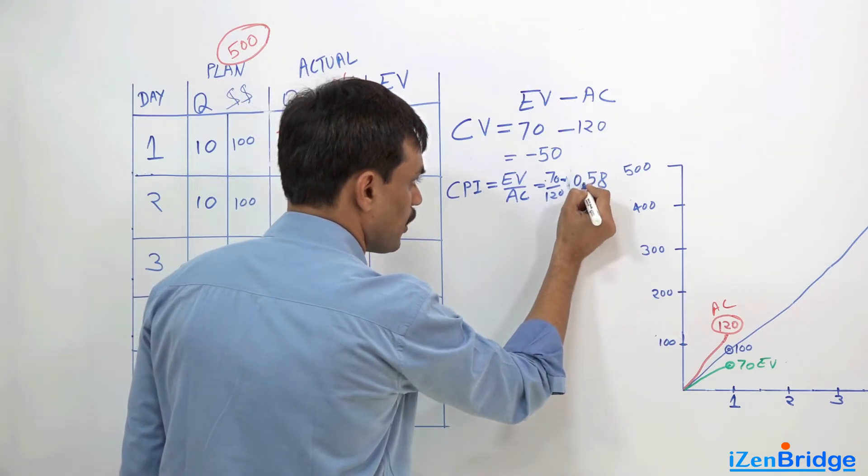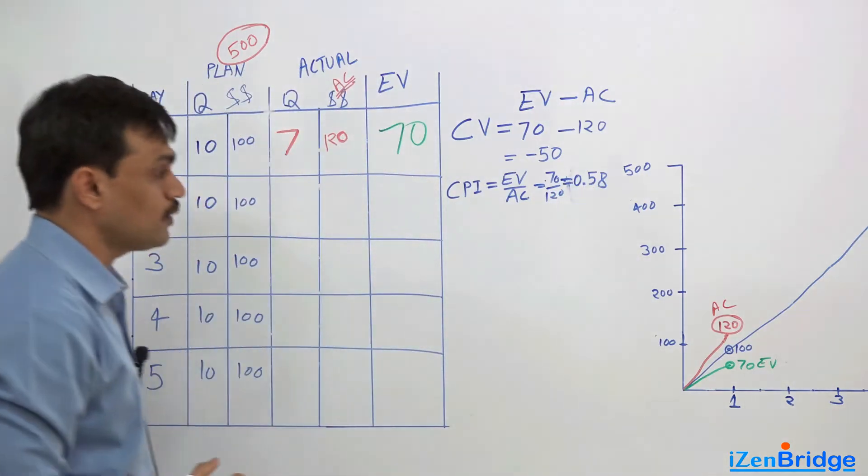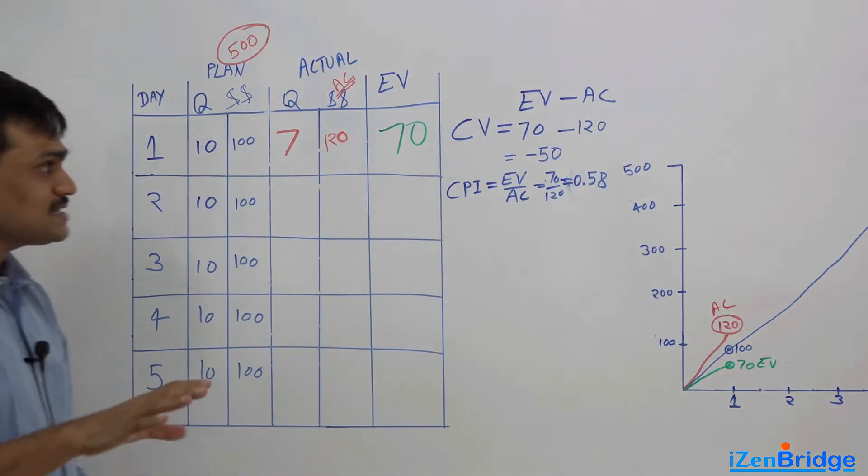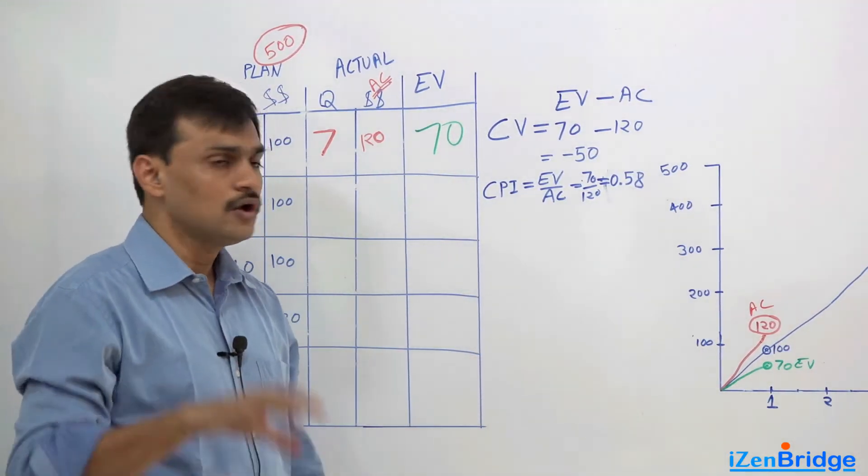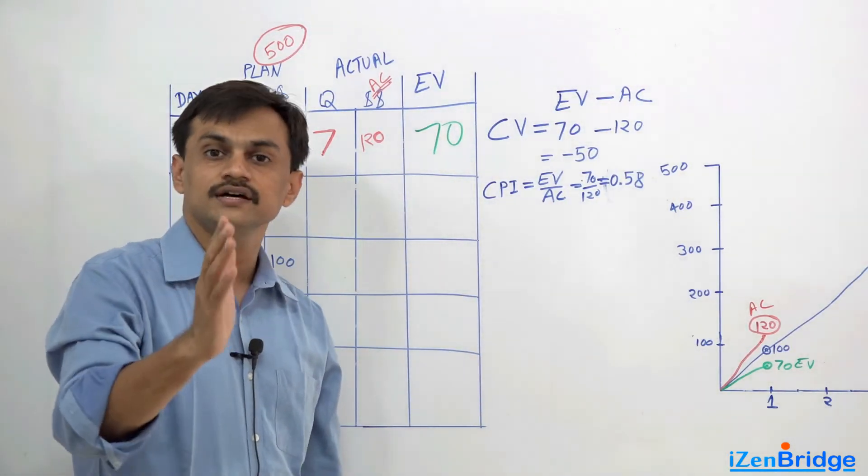So you have 0.58. Now what does it represent? As a formula point of view, if you want to remember as a PMP exam test taker, all these variances - the first figure is earned value, that is it.